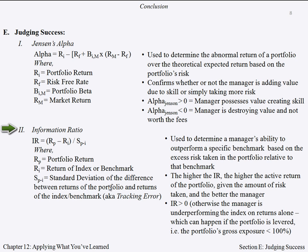However, the information ratio can be less than zero if the portfolio is levered. So even though alpha is being produced, the IR is negative.